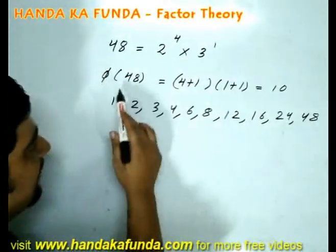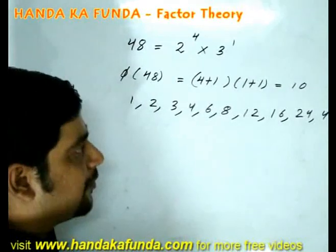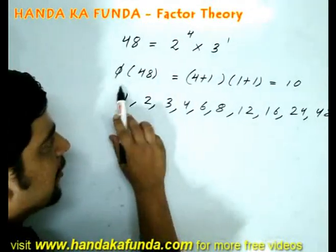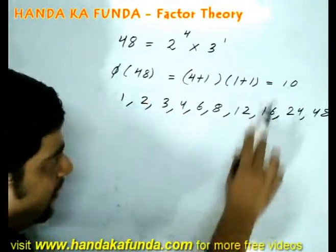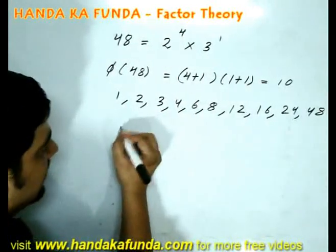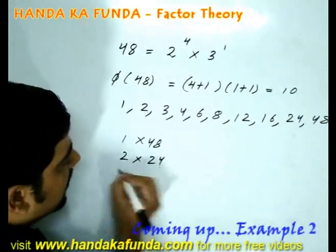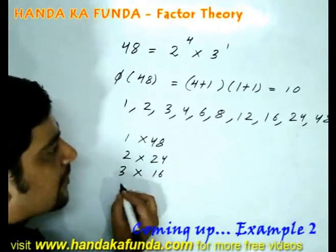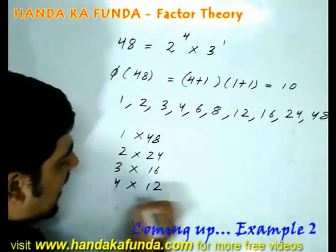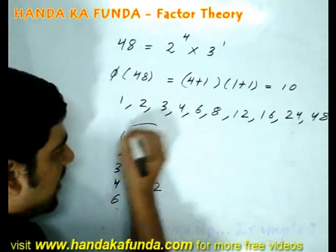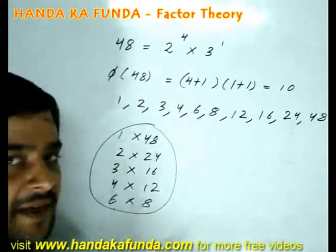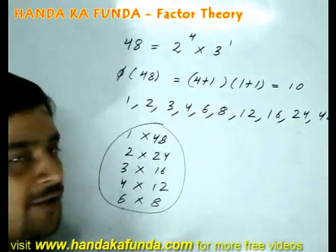In how many ways can 48 be expressed as a product of 2 factors? You remember the answer for that was phi n by 2 since it is even. Let us check it. 1 into 48, 2 into 24, 3 into 16, 4 into 12 and 6 into 8. There are indeed 5 ways in which it can be expressed as a product of 2 factors.